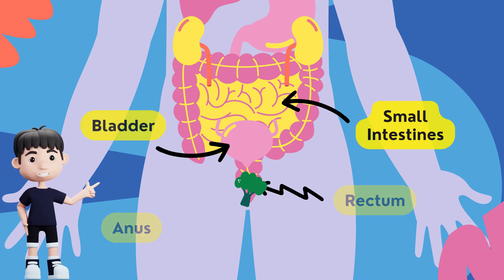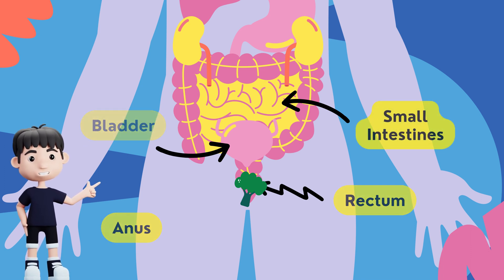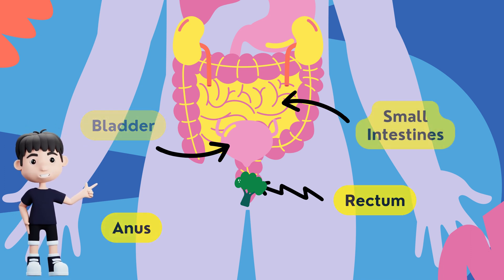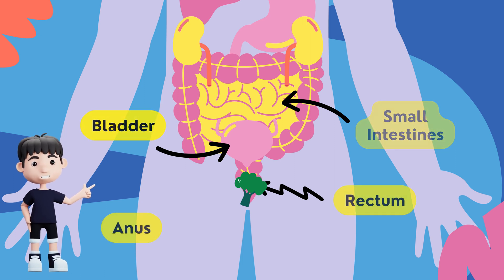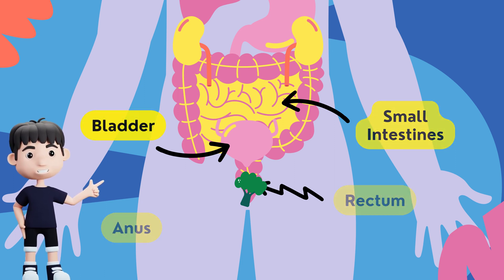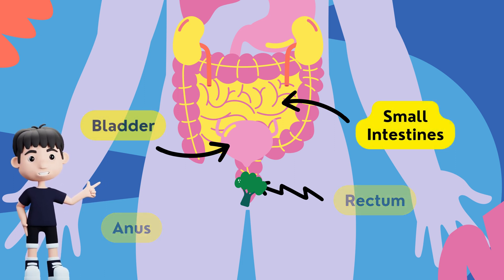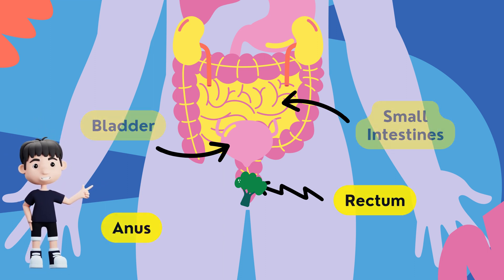Rectum. An 8-inch chamber that connects the colon to the anus. The rectum receives stool from the colon, sends signals to the brain if there is stool to be evacuated, and holds the stool until evacuation can happen.